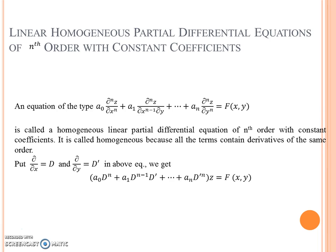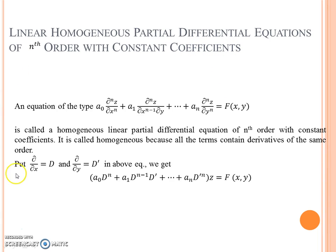Now, what is the linear homogeneous partial differential equation of nth order with constant coefficients? This is the general form of this type of equation. It is called homogeneous because all the terms contain derivatives of the same order. If we replace del/del x by D and del/del y by D', we get the symbolic form of this equation.